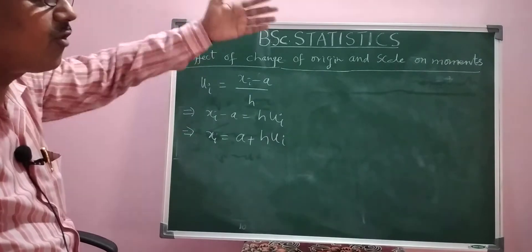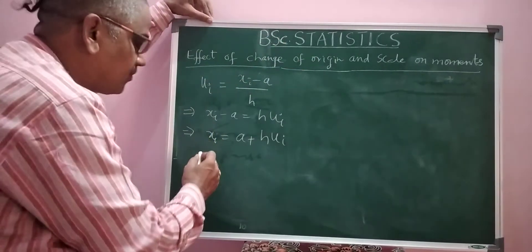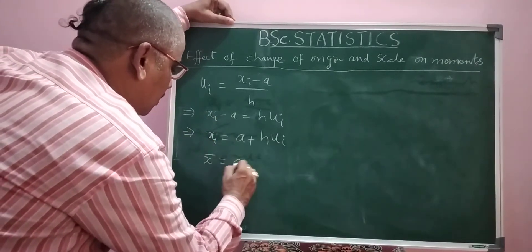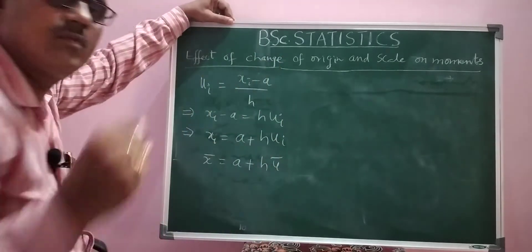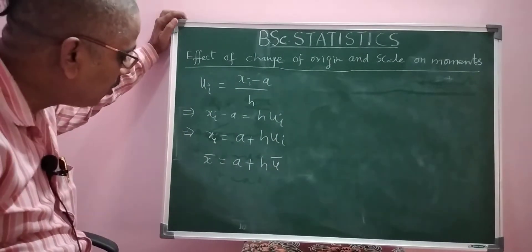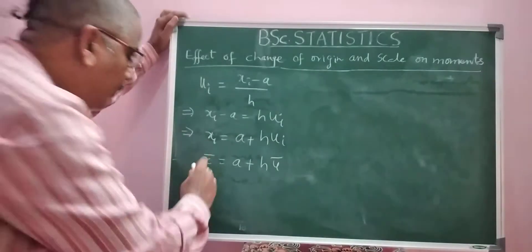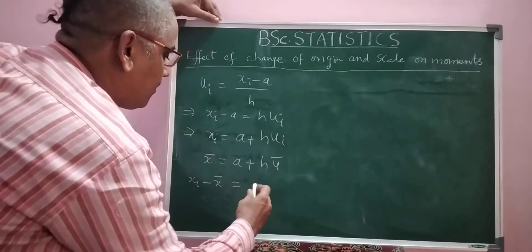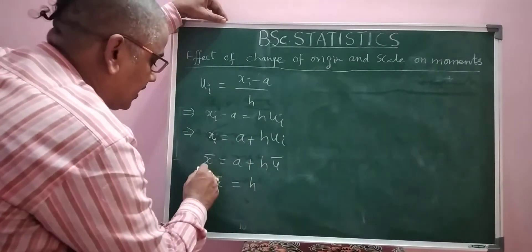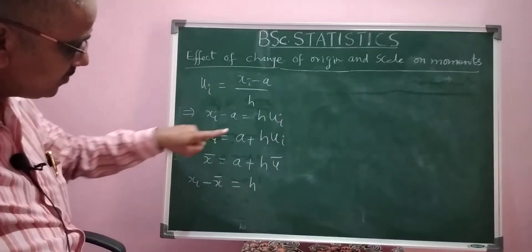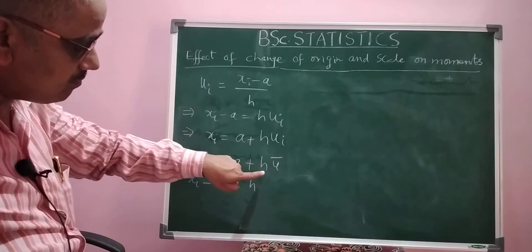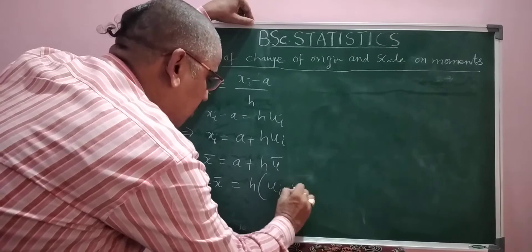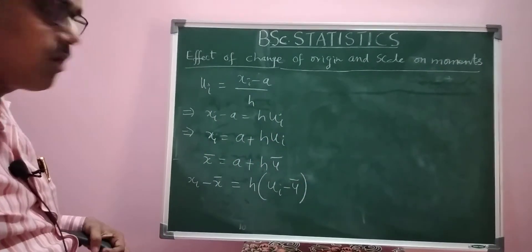This is sufficient for calculating non-central moments. For central moments we need x̄, so x̄ equals a plus h times ū. Therefore, x_i minus x̄ equals (a plus h·u_i) minus (a plus h·ū), and a cancels, giving h times (u_i minus ū).